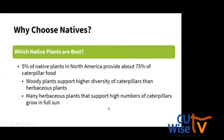Not all native plants are created equal. When it comes to host plants, only about 5% of native plants in North America provide up to 75% of caterpillar food — so a small number of species provides the bulk of the food for our caterpillars. Research shows that woody plants like trees and shrubs support the highest diversity of caterpillars compared to herbaceous plants. Oaks can support over 500 different species of caterpillars across North America. Herbaceous plants that support the highest numbers of caterpillars often grow in full sun — so where does that leave native shade garden plants?